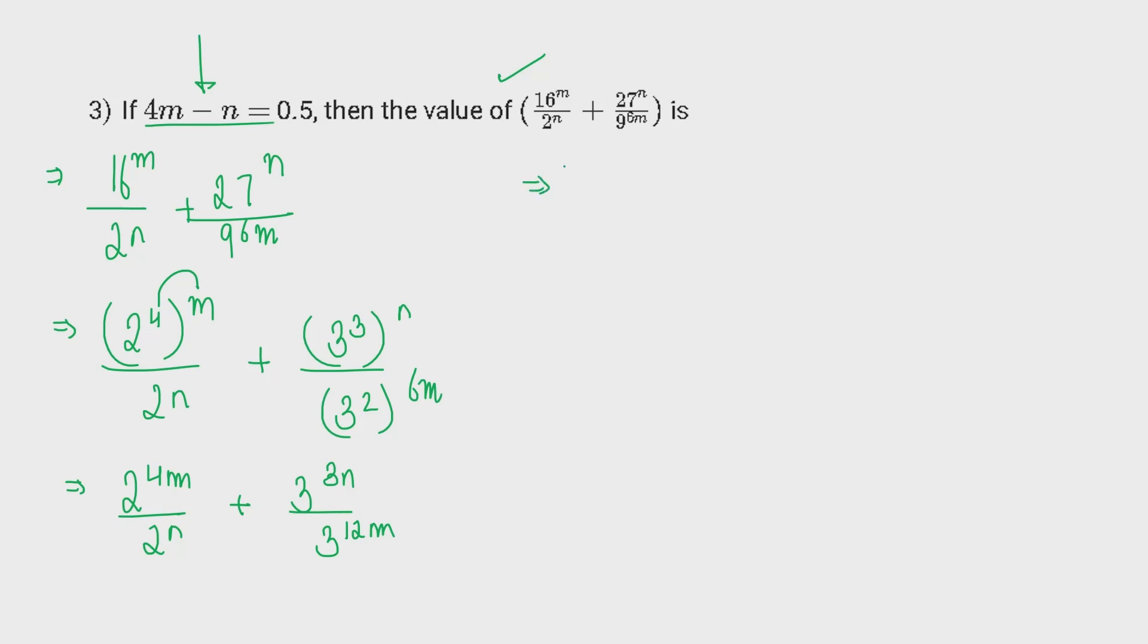Now, since we have the same base in numerator and denominator, we can club the powers. We have negative sign with the n because n is coming from the denominator.